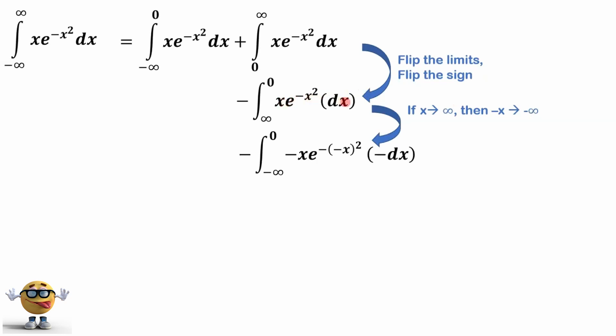So everywhere there's an x here, we're going to put in negative x. And if we do that, then our limits change. Zero is still zero, but we're going to go from negative infinity.